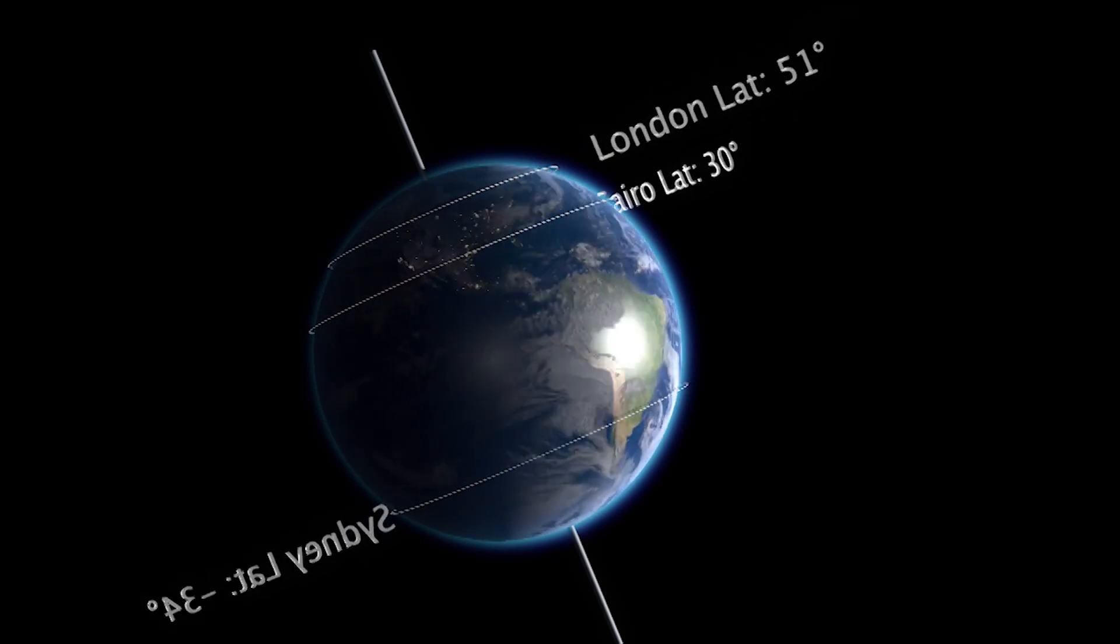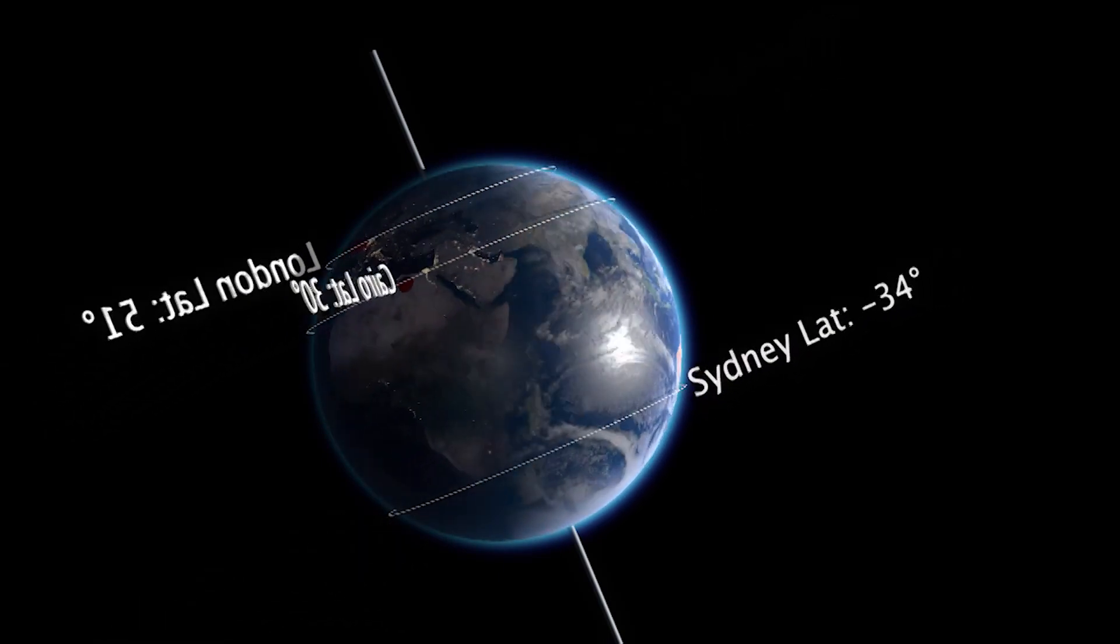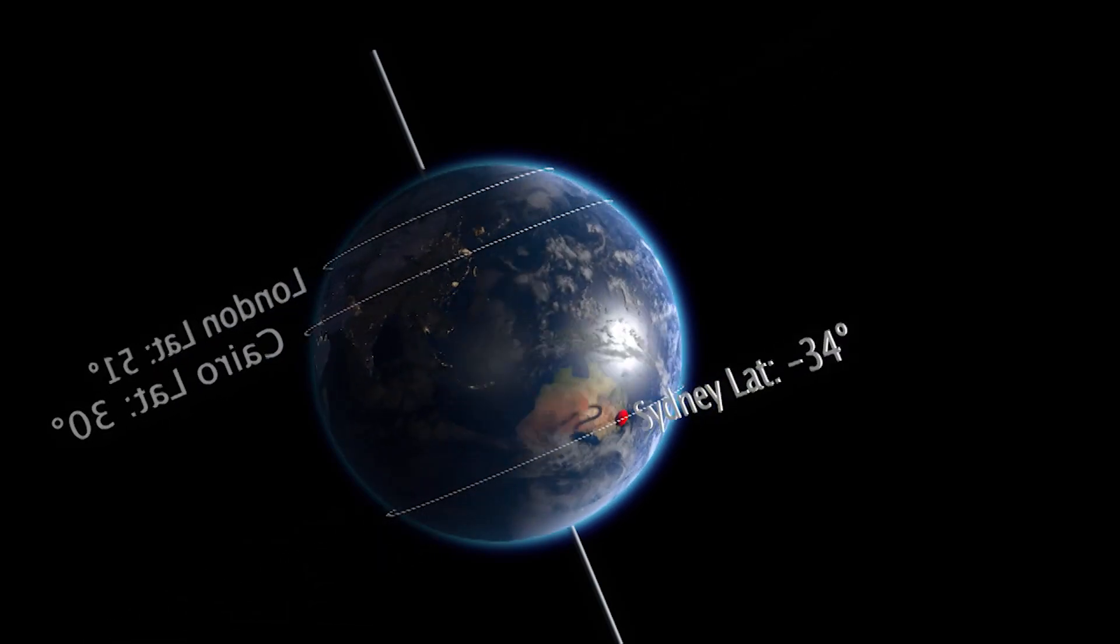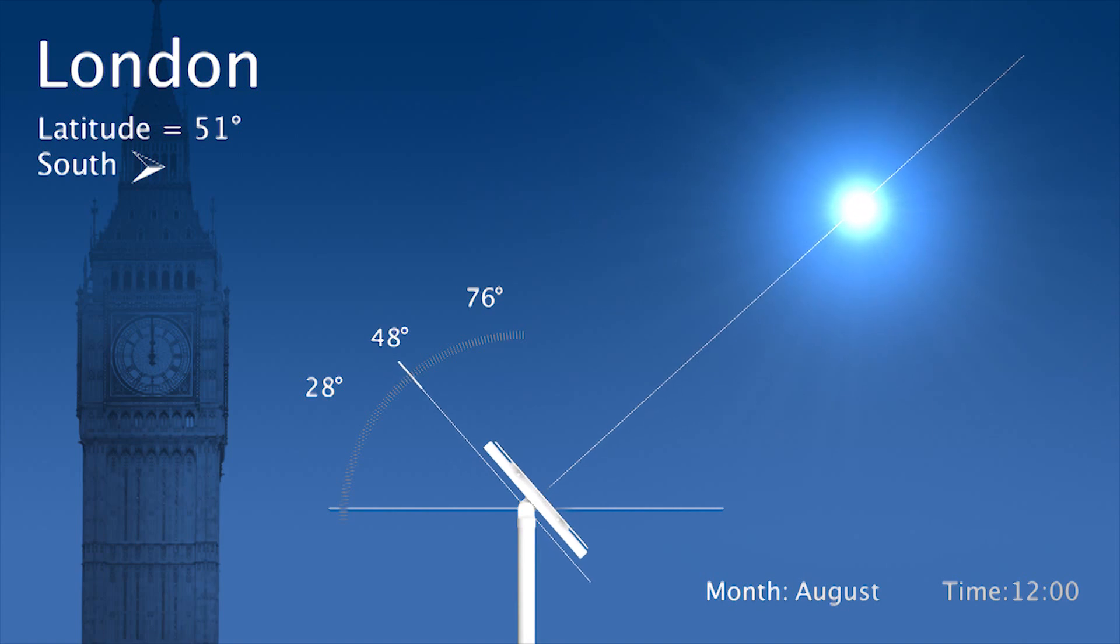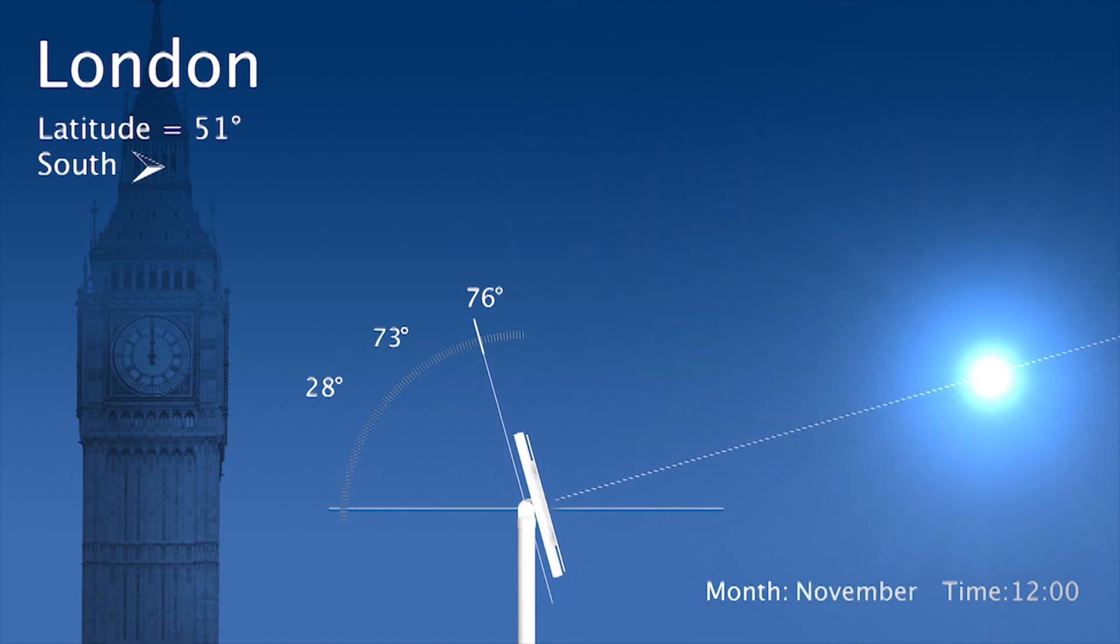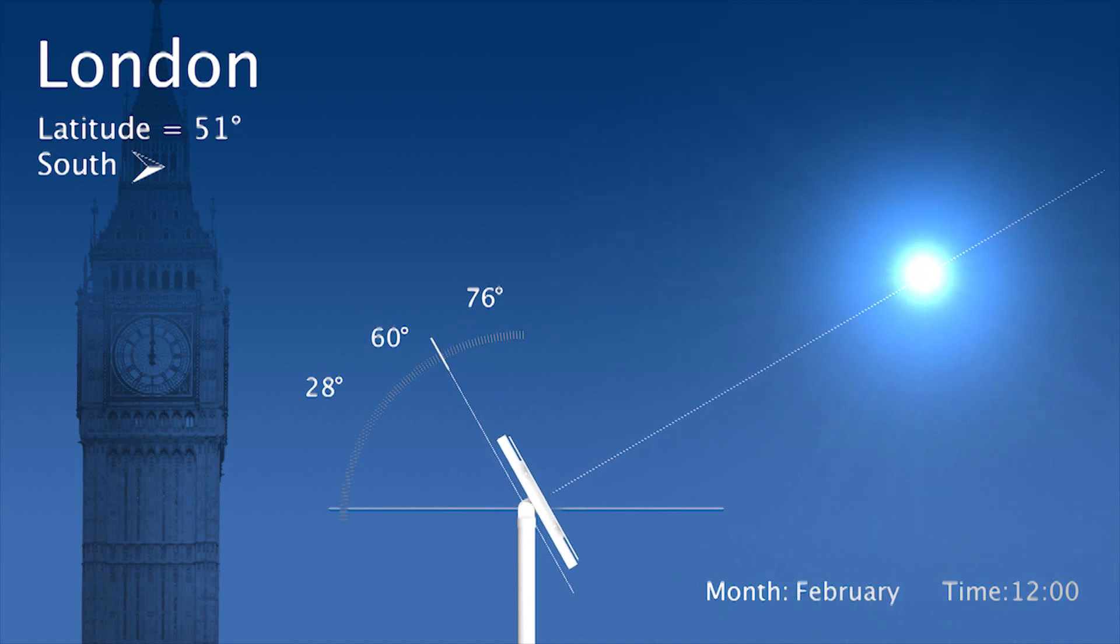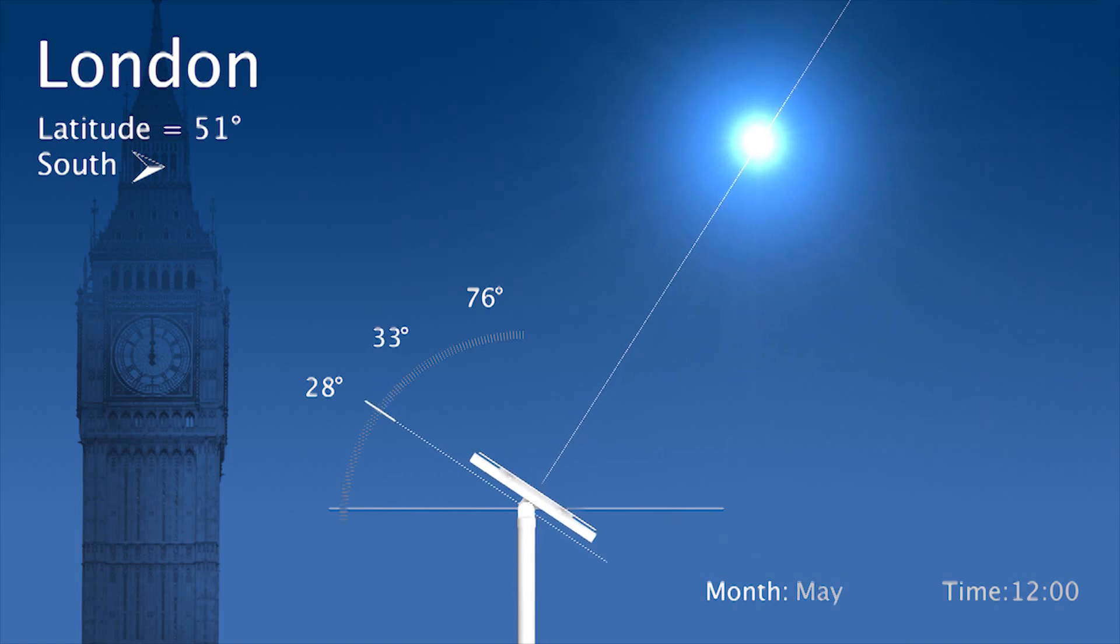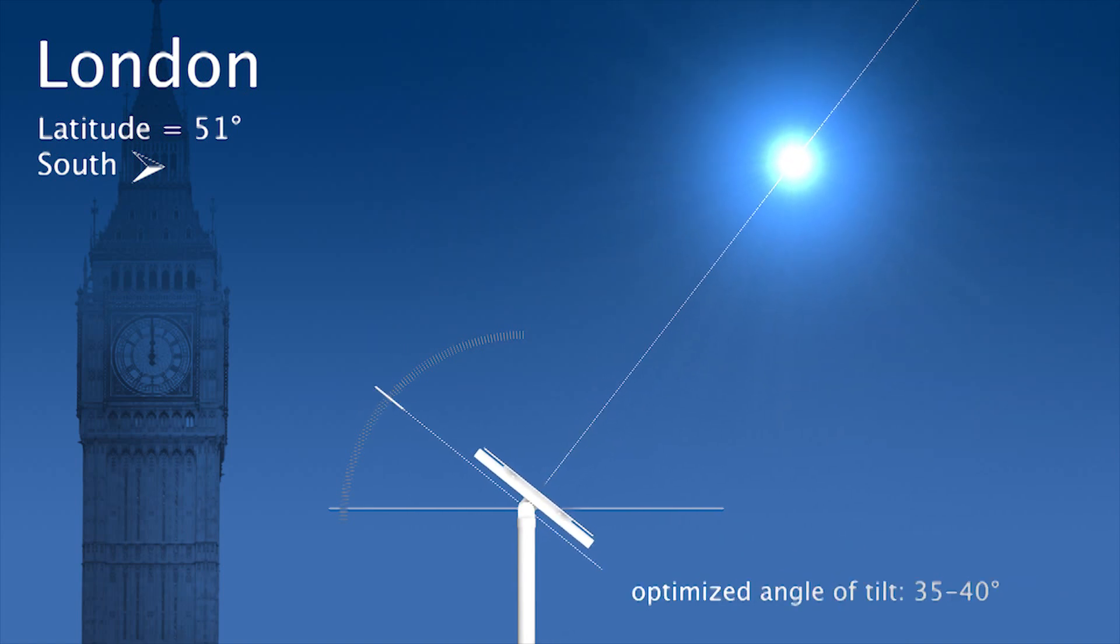Let's see how a sun tracking PV panel is working in different places around the earth. We will first go to London. London has a latitude of around 51 degrees. Consequently, the range of tilt angles throughout the year for a panel tracking the sun varies from 28 degrees to 76 degrees. The panel in this case is oriented towards the south. The optimized angle of tilt will be 35 up to 40 degrees facing south.